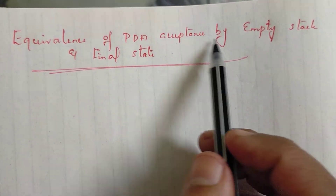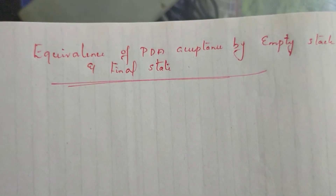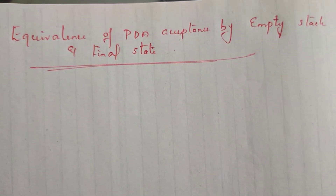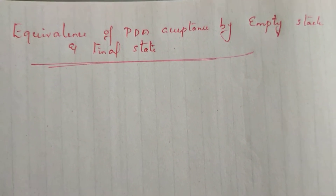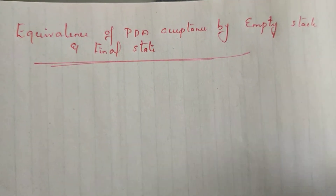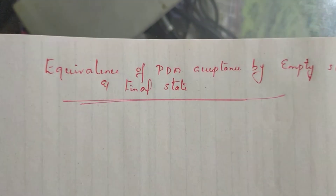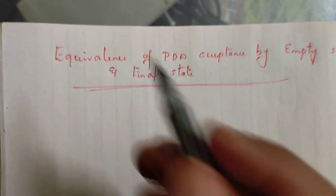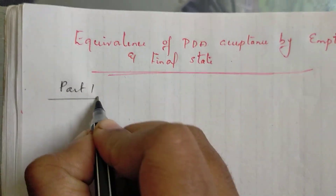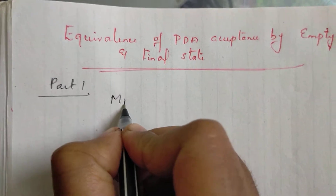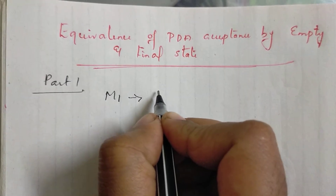External equivalence of PDA acceptance by empty stack and final state. If a pushdown automaton accepts a string by empty stack, it will reach the string in the final state. If you want to accept the string in the final state, we will use a PDA to accept the string.